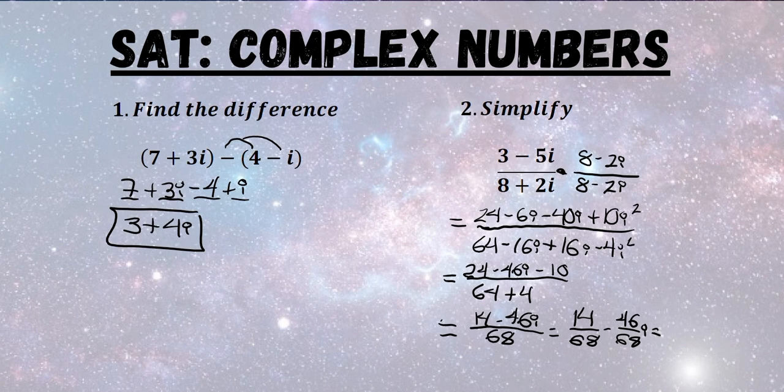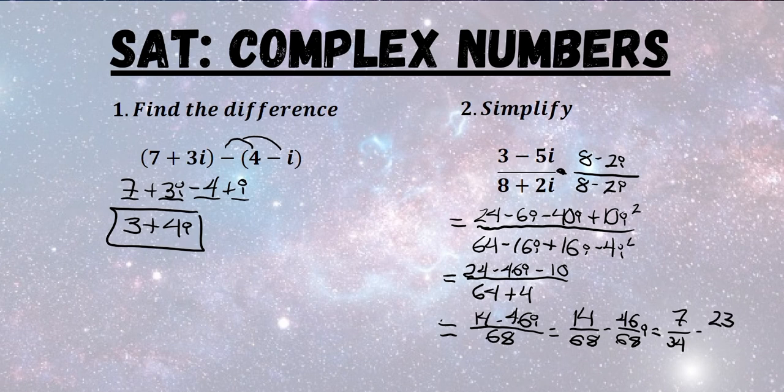We can divide all these numbers by 2. And we're going to end up with 7 over 34 minus 23 over 34i.